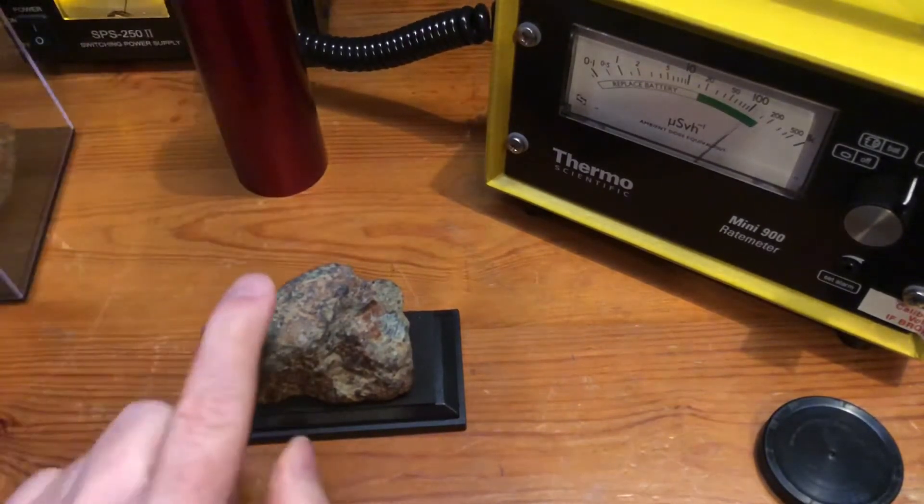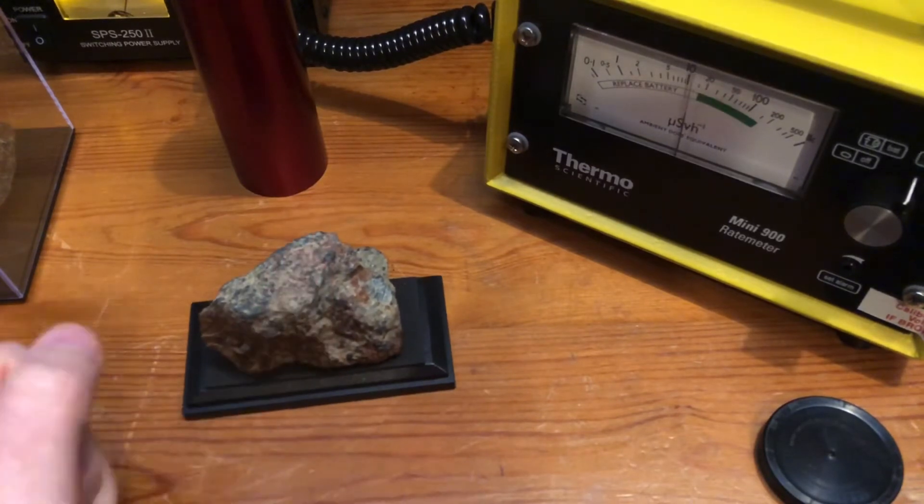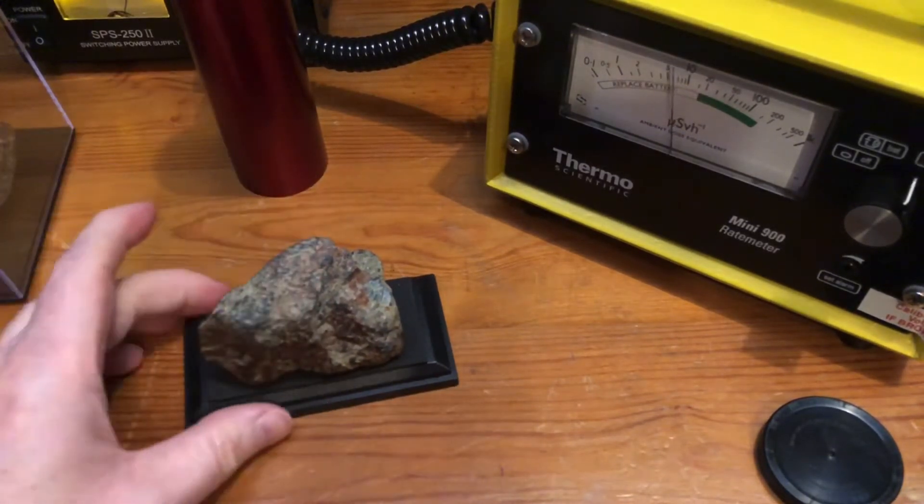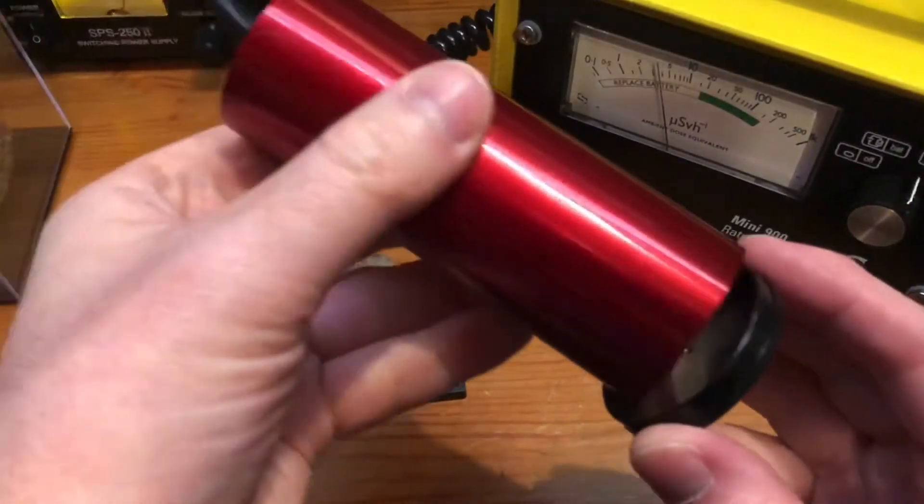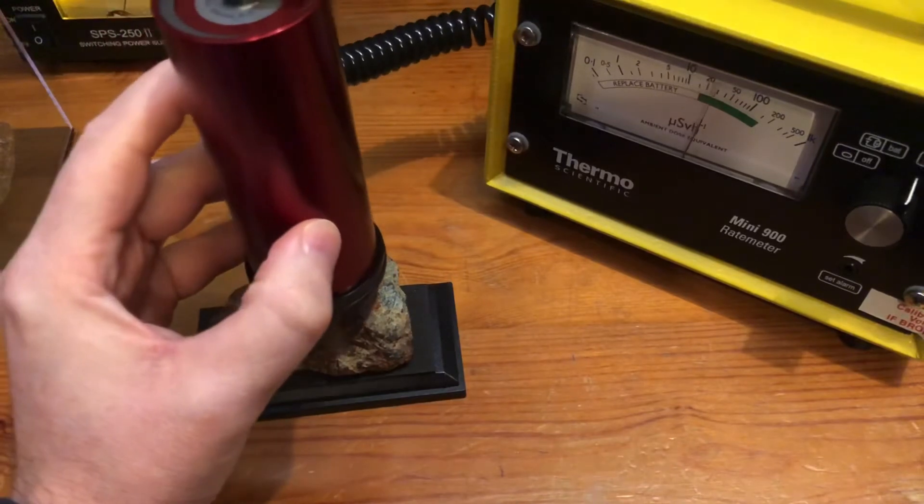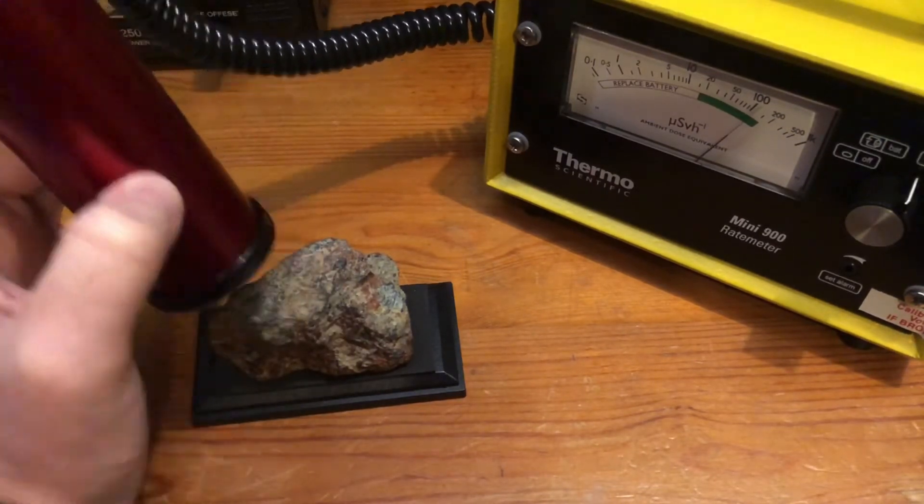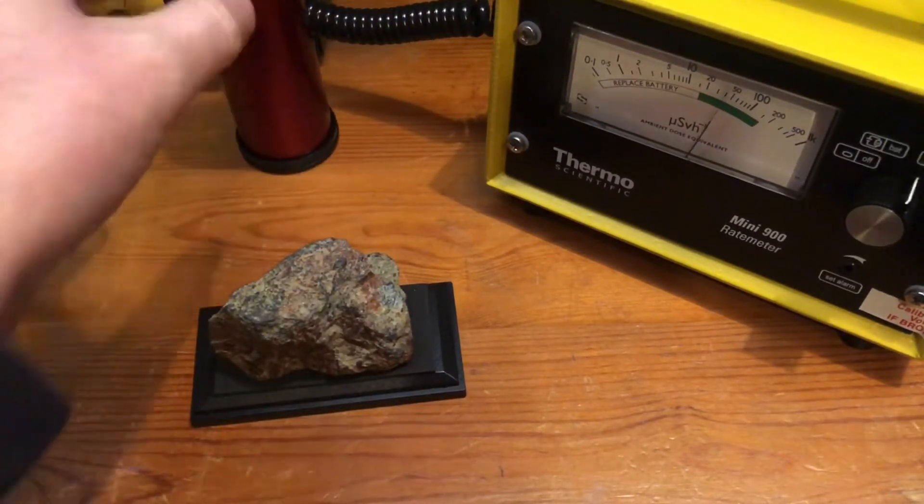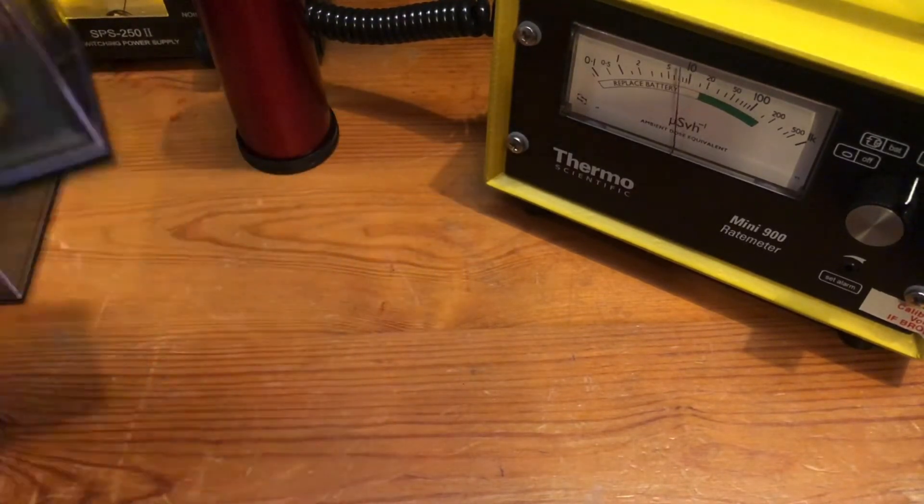So we're half a millisievert with this, and that will be comparable to the claw at Chernobyl in its radioactivity. Now obviously if I put on the alpha beta shield, you can see that cuts it way down. It's still 100 microsieverts, but it's a heck of a lot less than 500. So I'll put these bits back over here.